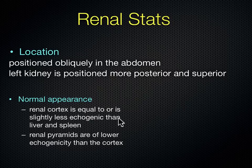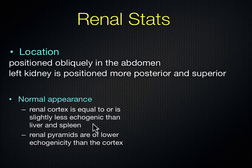The renal cortex is less echogenic than the liver or the spleen. The renal pyramids, because they're filled with urine, are less echogenic than the cortex. So in terms of brightness, the liver and spleen are brighter than the kidney's cortex, but the kidney's cortex is brighter than the renal pyramids. The renal pyramids are less echogenic than the cortex.